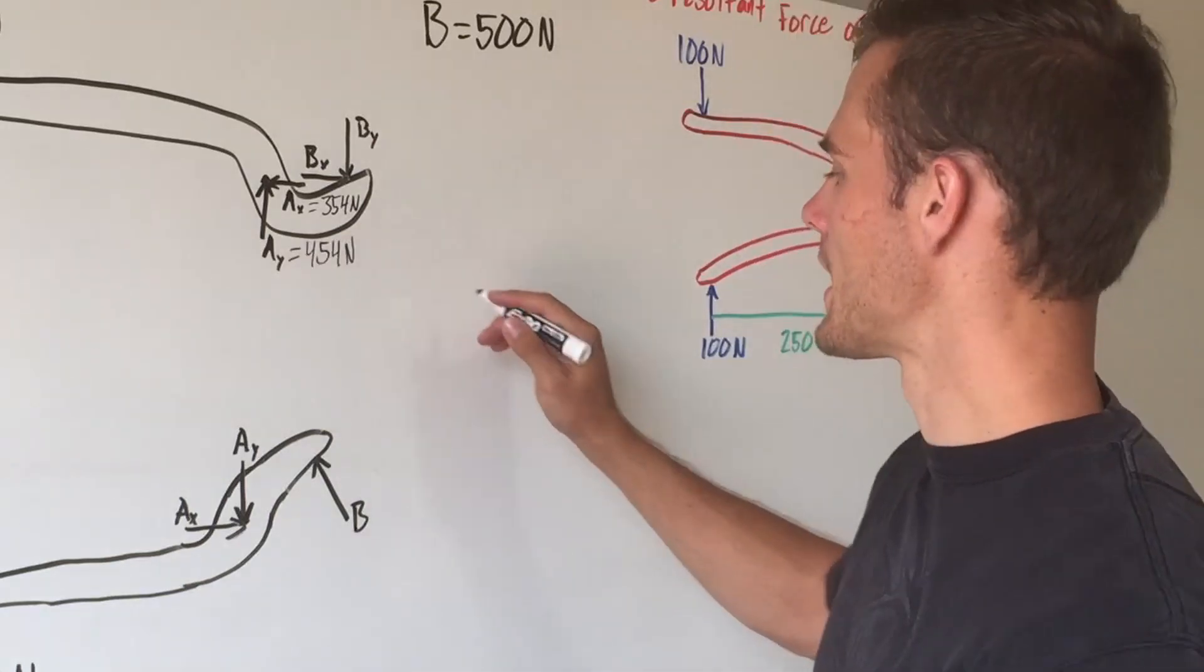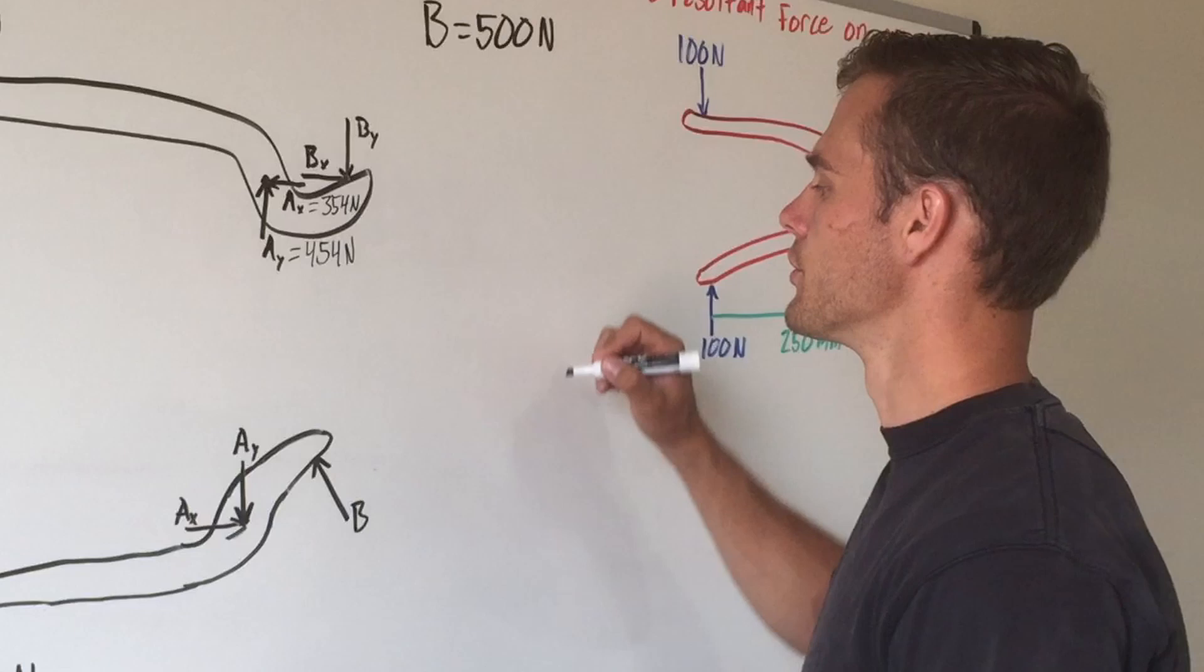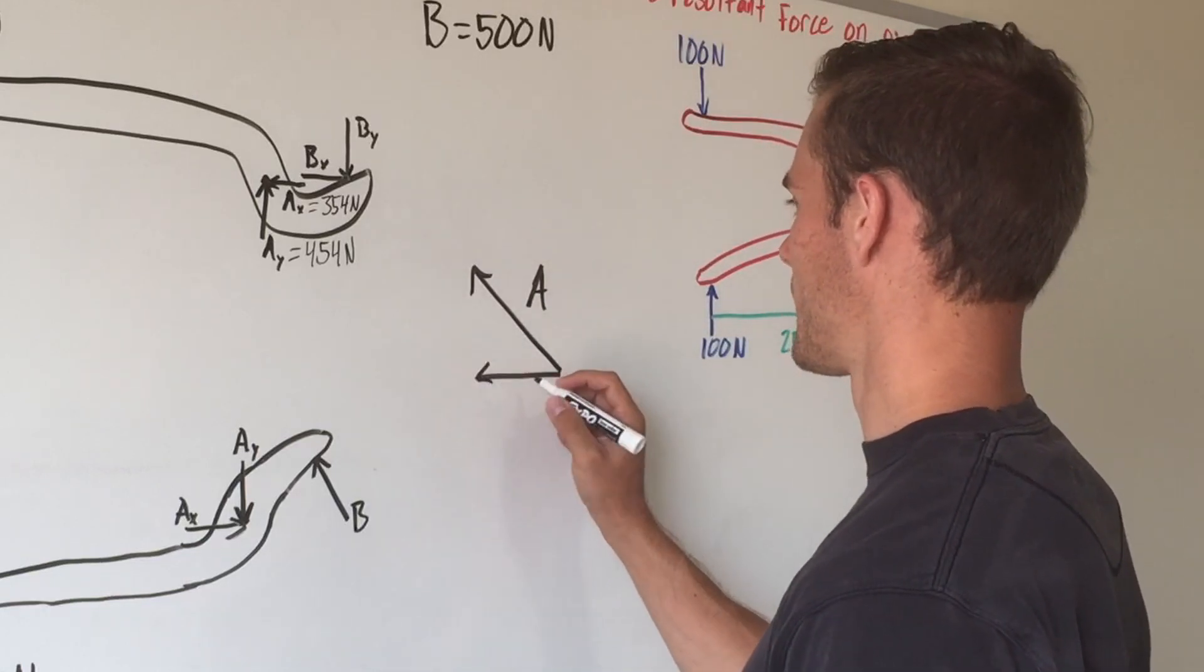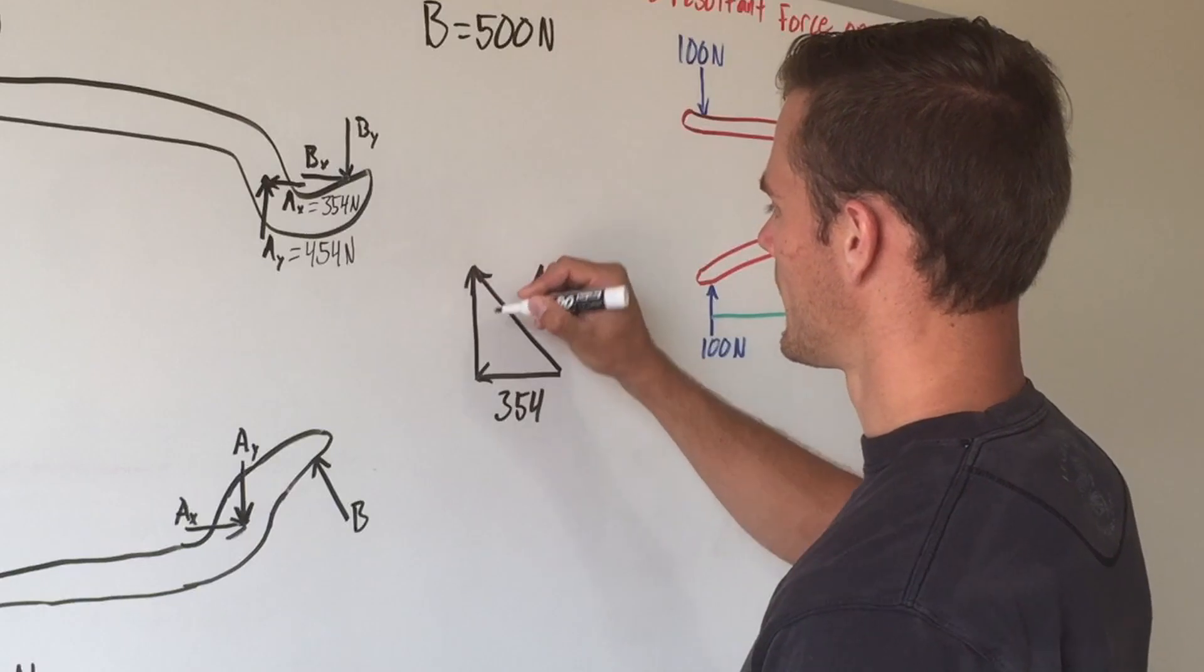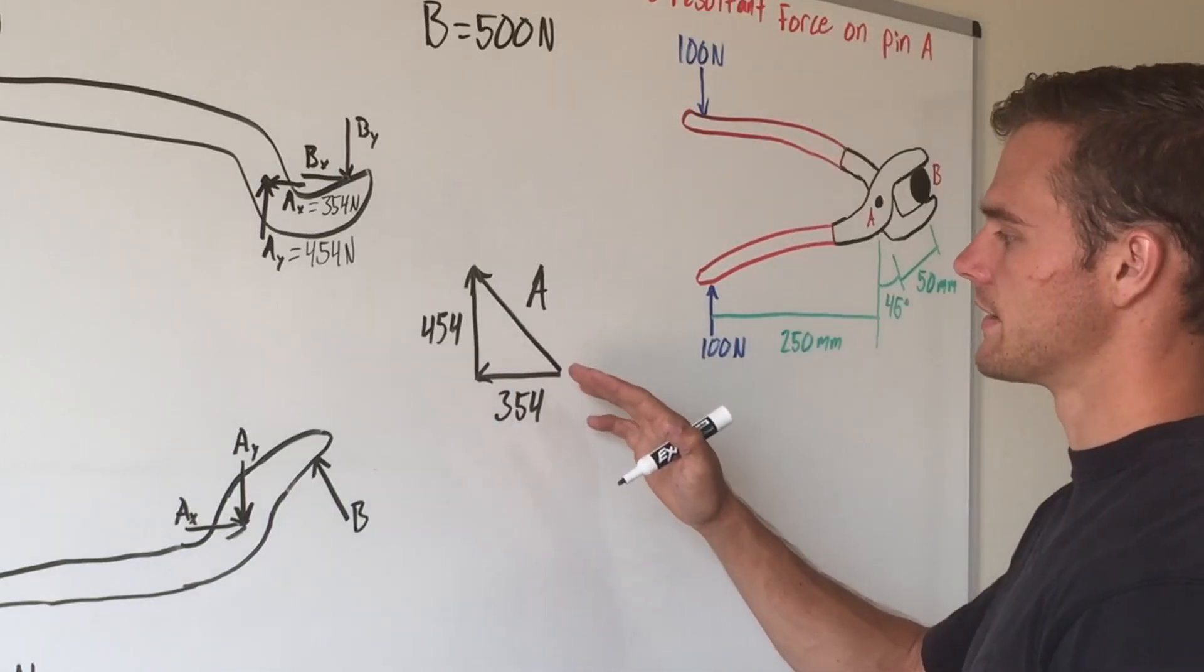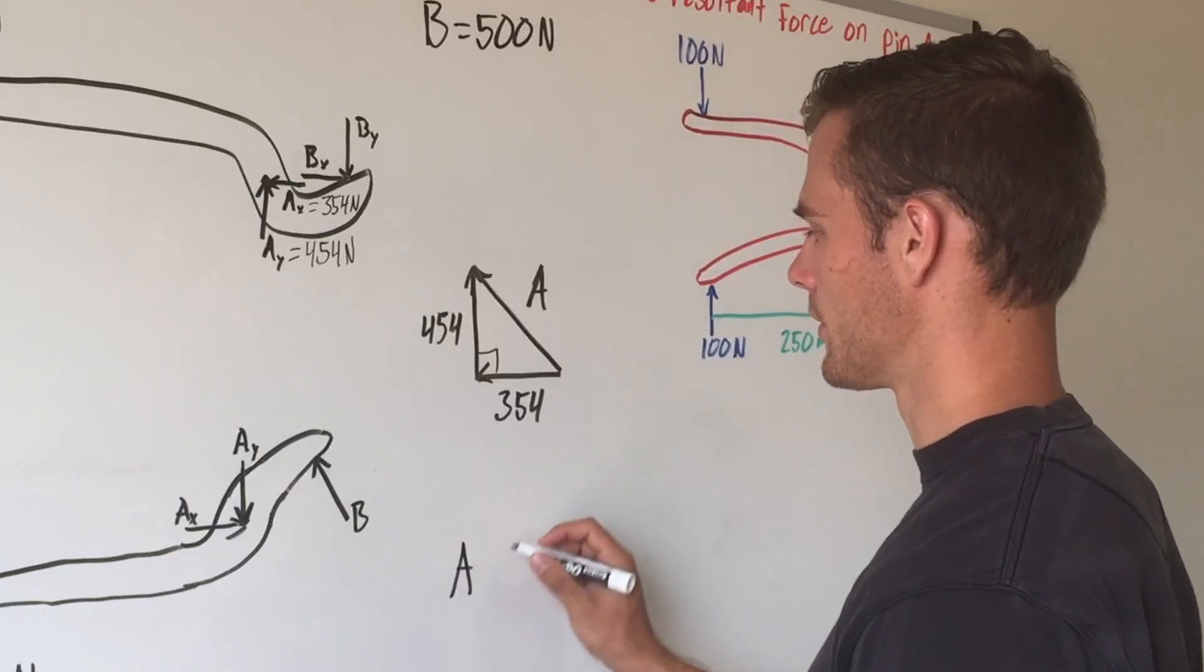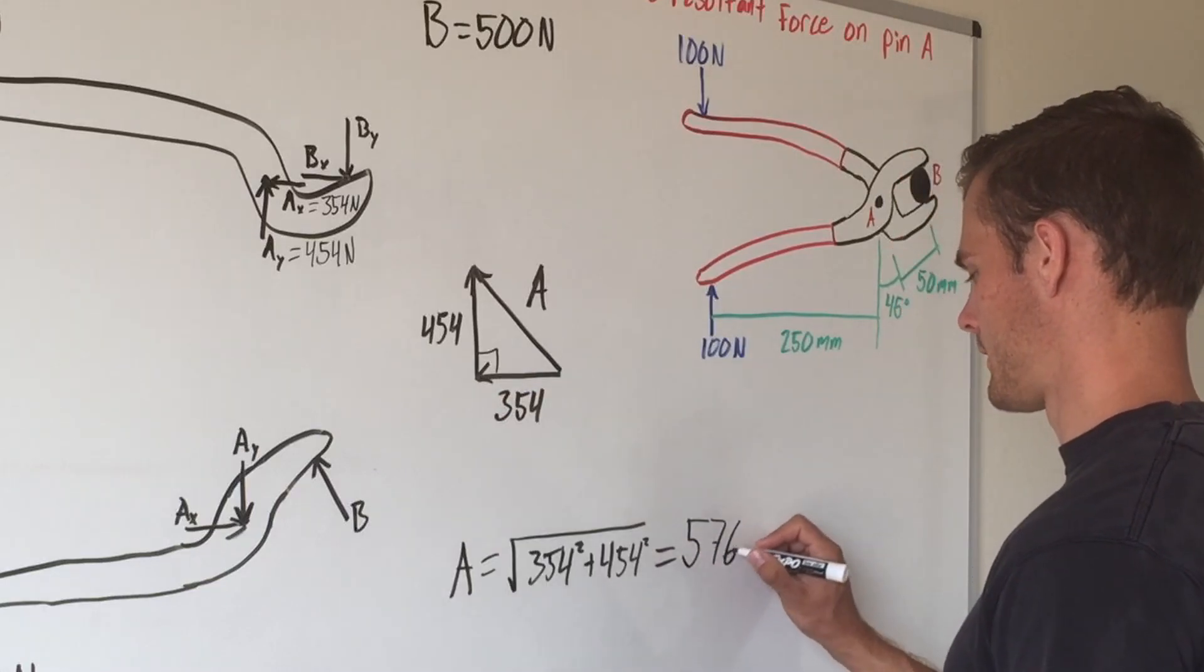And we can label that right here. So now that we've found the x and y components of our force A, we can use vector addition once more to solve for what that force is going to be. So we have our vector here that is A, and it is split into its x and y components, and we know them, which is 354 for the x component and then 454 for the y component. And because this is a right triangle here, we can use the Pythagorean theorem to find what A is. So A would equal the square root of 354 squared plus 454 squared, and that equals 576 newtons.